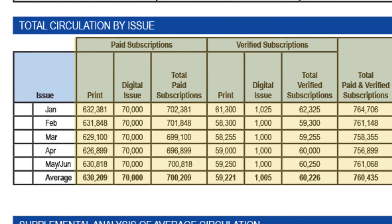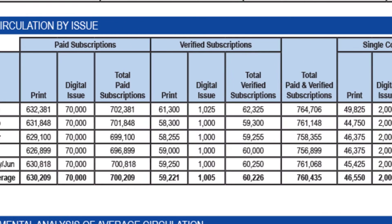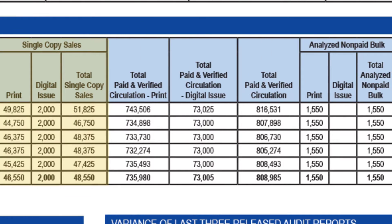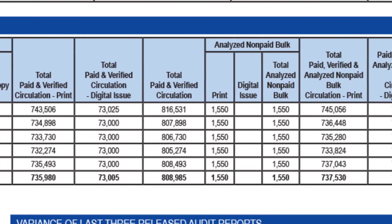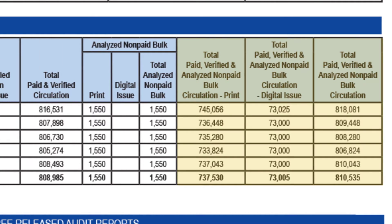The next section presents circulation for each issue in the period with breakouts for paid and verified subscriptions, single copy sales, analyzed non-paid bulk, and the totals. You can also find information about print and digital circulation for each category in this section.